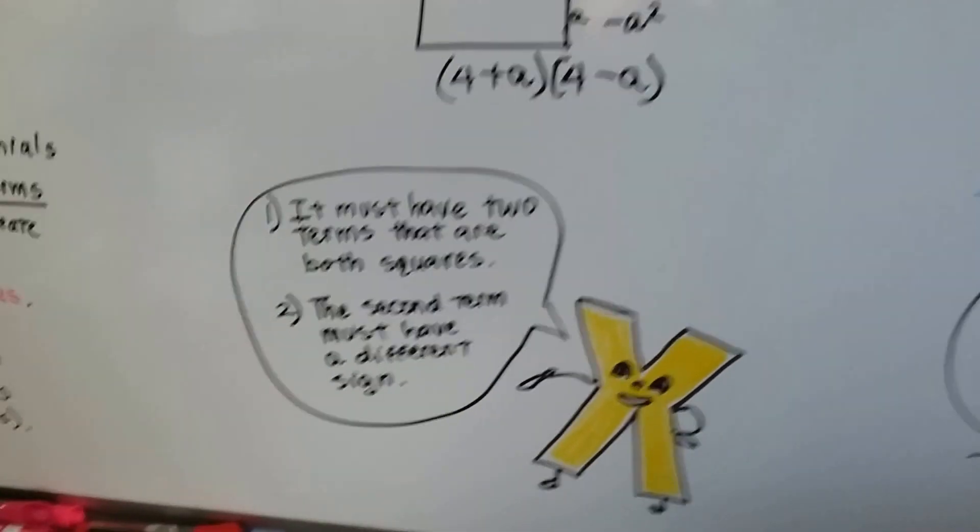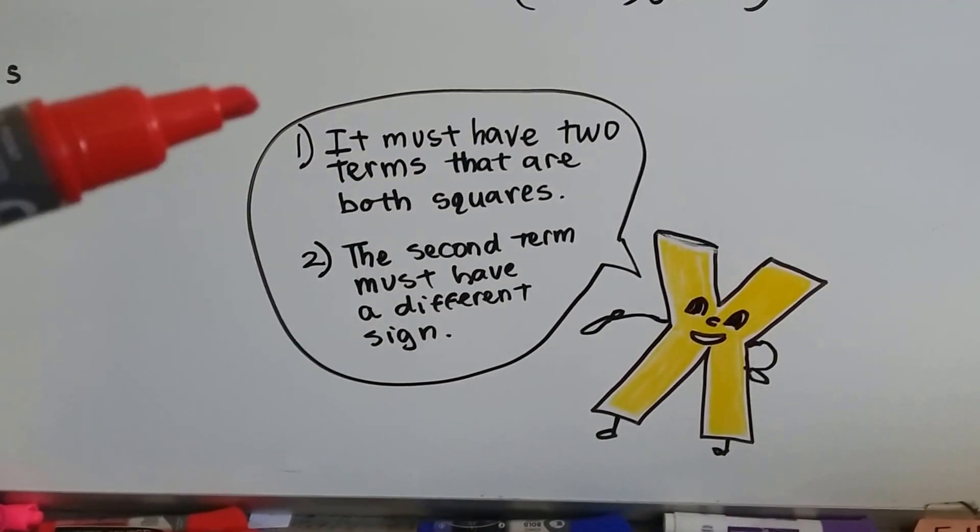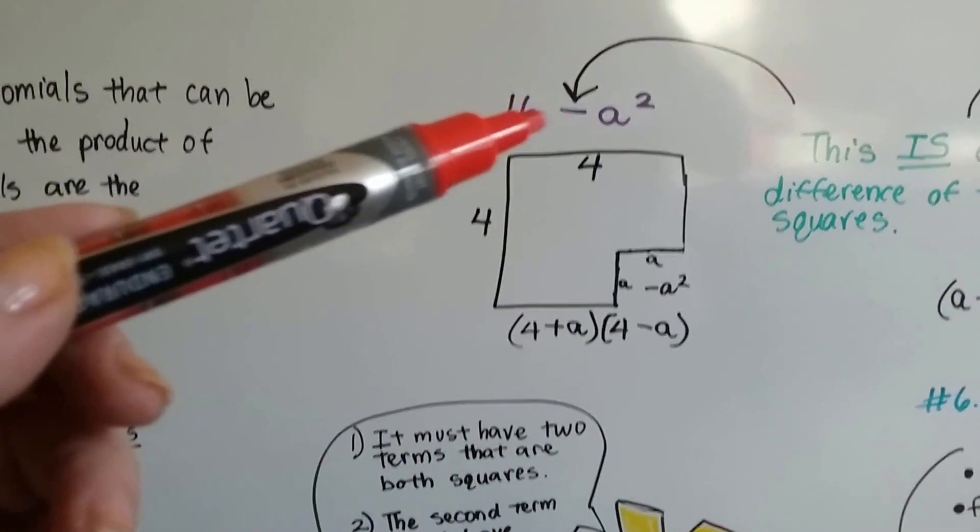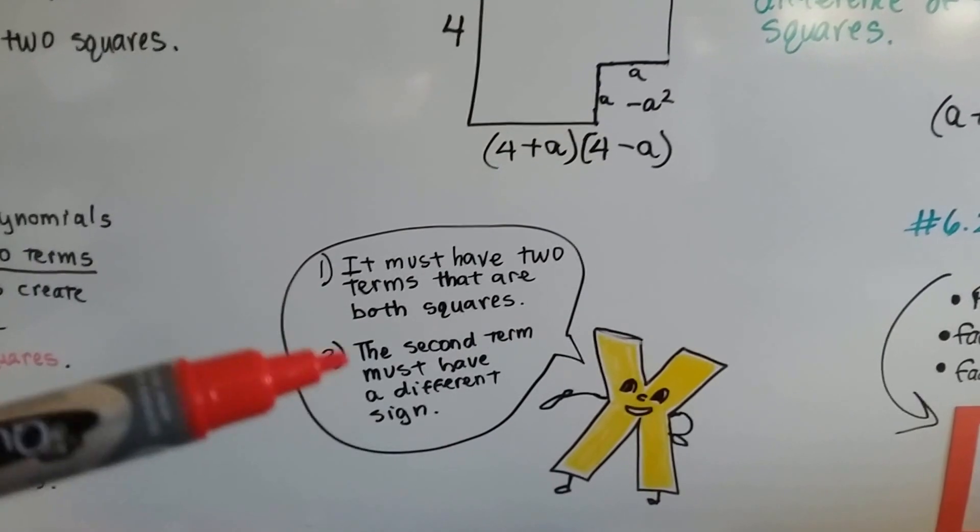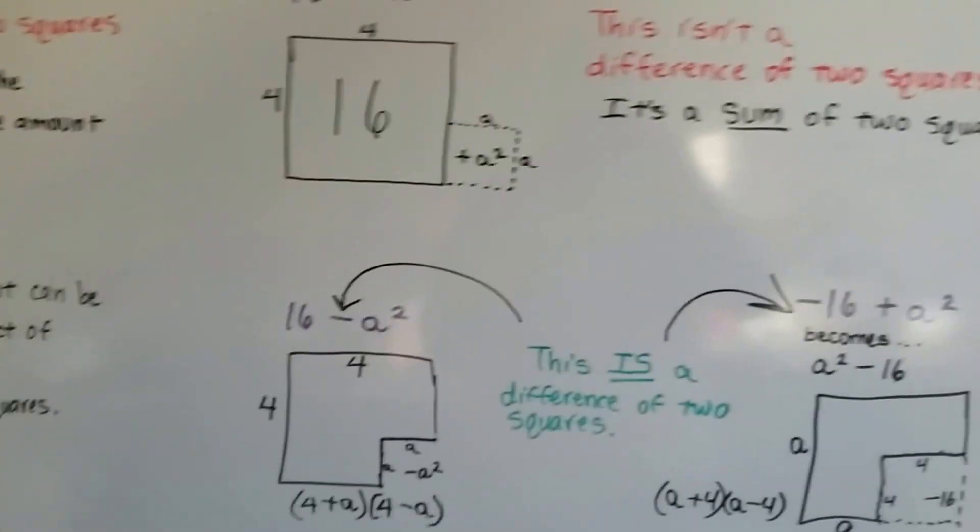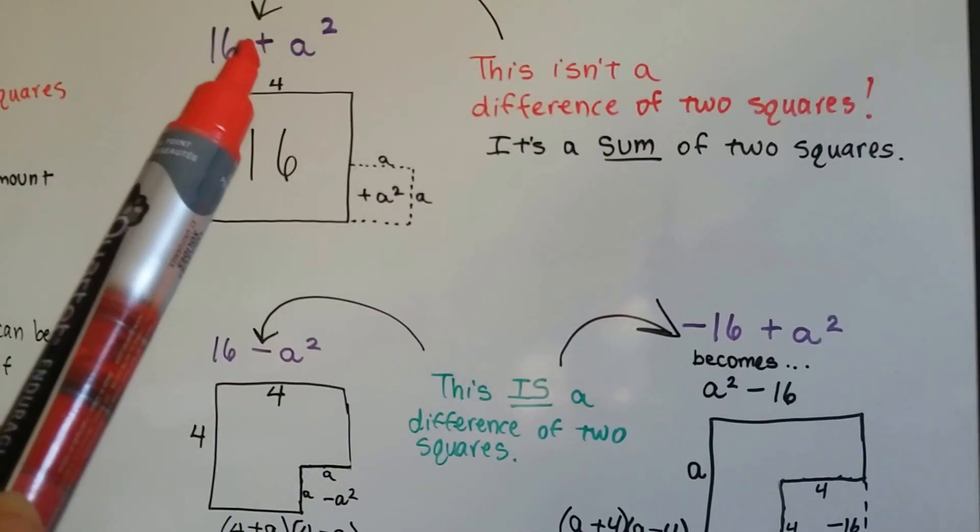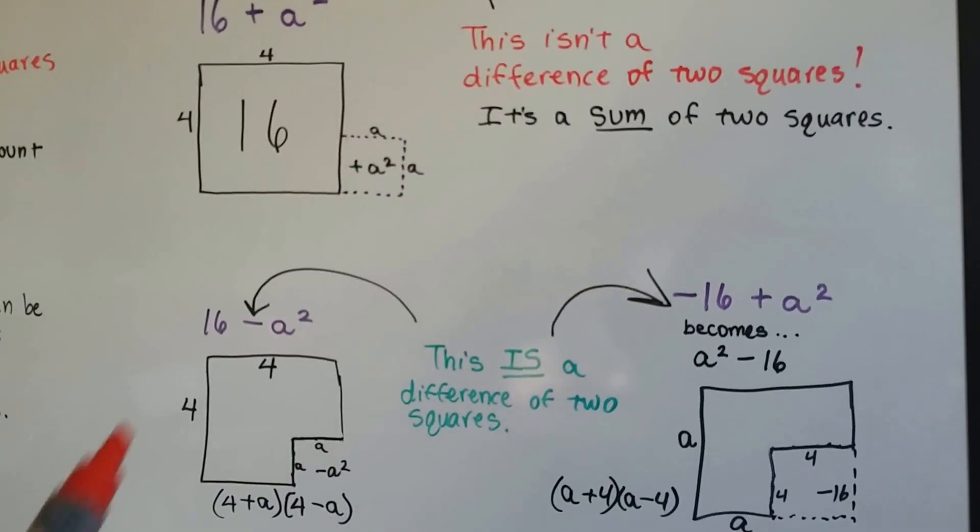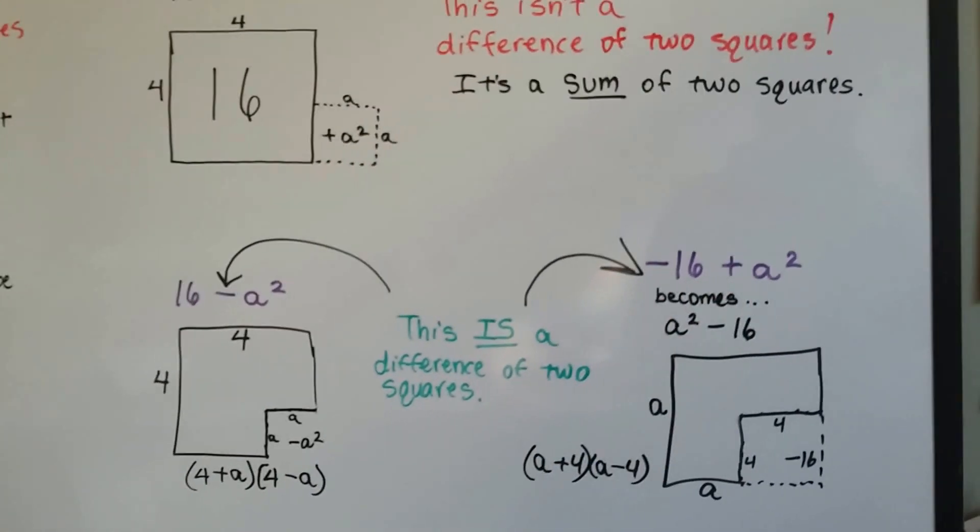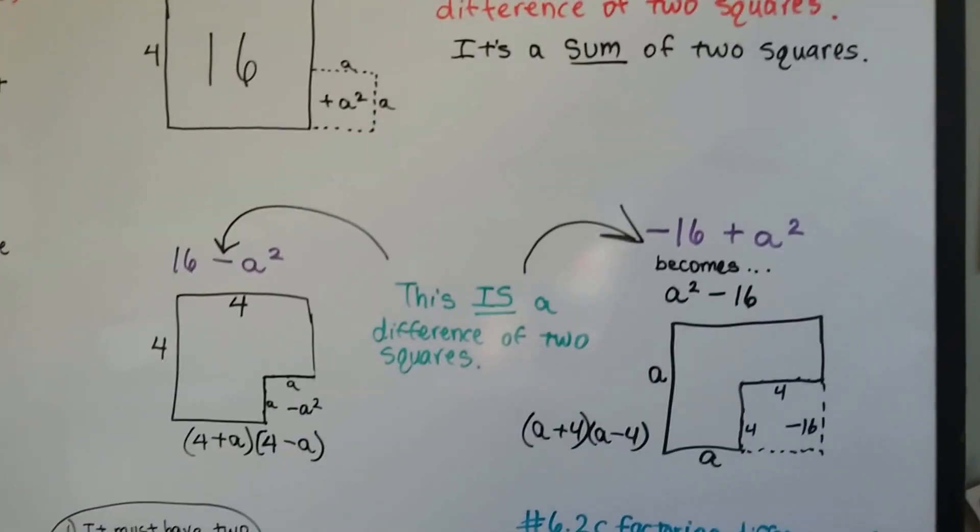So remember, the two conditions that it must have for the difference of two squares is the first thing is it must have two terms that are both squares. Like a 16 or an a squared. And the second term must have a different sign. So it doesn't have to have a minus sign. It just has to have a different sign than the first one. So if this one is a positive, and that's a positive, then it doesn't work. If this one's a positive and that's a negative, yes, it does work. And if this one's a negative and that's a positive, yes, it does work. As long as they have different signs between them and they're both squares.